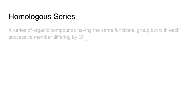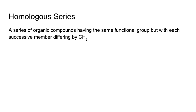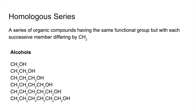Homologous series — that's a series of organic compounds having the same functional group, but with each successive member differing by CH2. So I've got two to show you. The alcohols first — you can see very clearly the difference between the first and the second is a CH2 unit, and the next one down is also a CH2, but everything else is the same. And of course, they've all got this OH group, and that makes them alcohols.